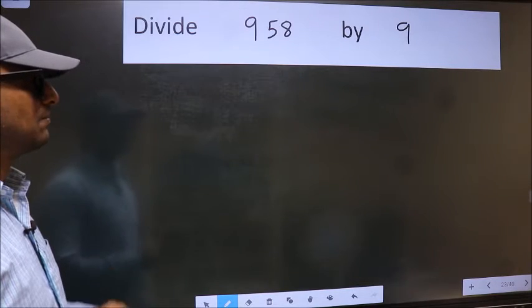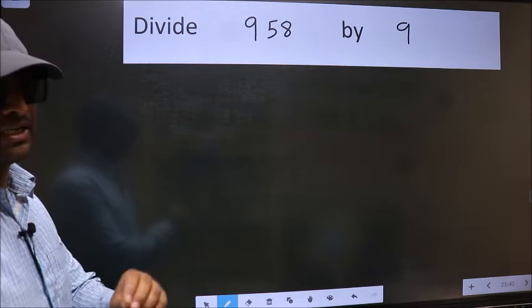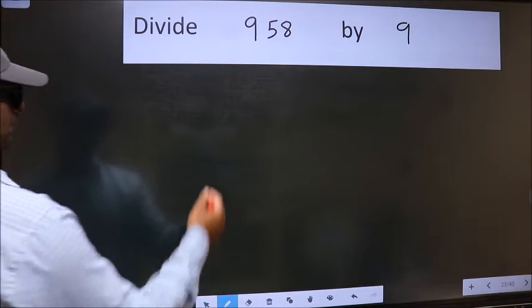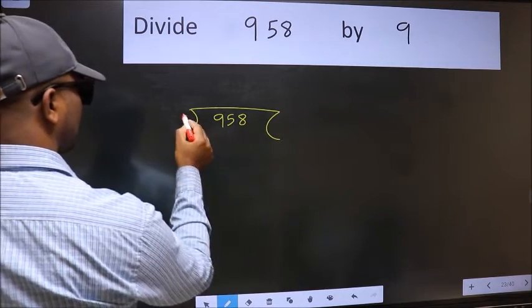Divide 958 by 9. To do this division we should frame it in this way. 958 here and 9 here.